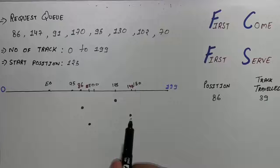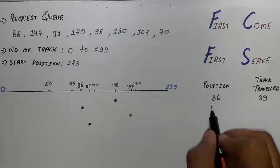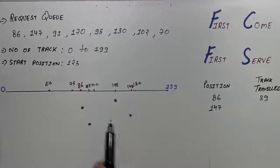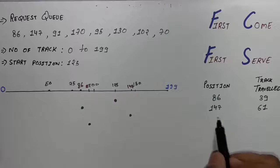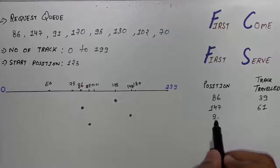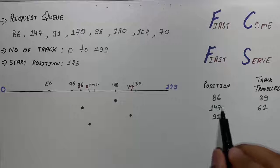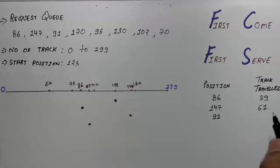Then you can see after 86 we move to the 147. So write 147 here and subtract the 86 by 147. So the answer will be 61. Then we move to the 91. So from 147 to 91 you can see this one. So now 147 minus 91 will be 56.